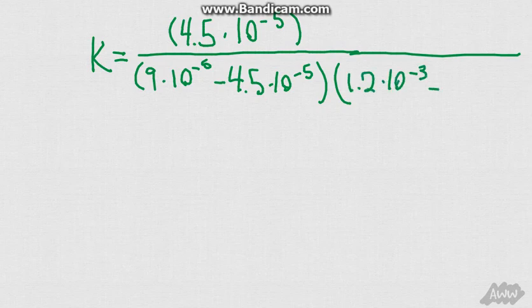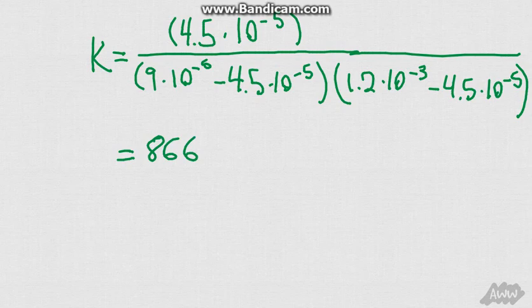You work all of that out, and you get that k is essentially equal to 866, and that is our problem for using ICE tables.